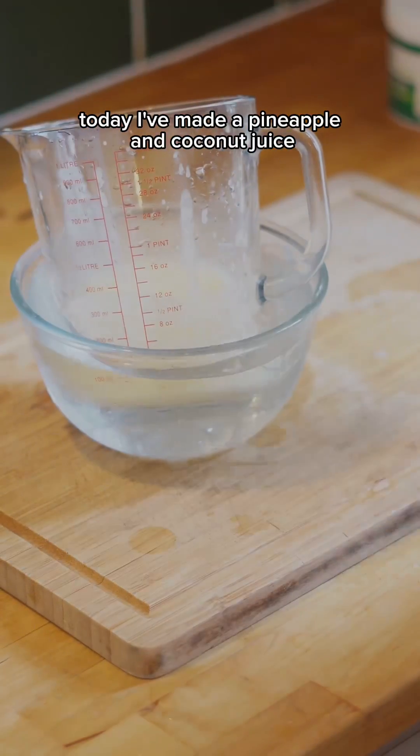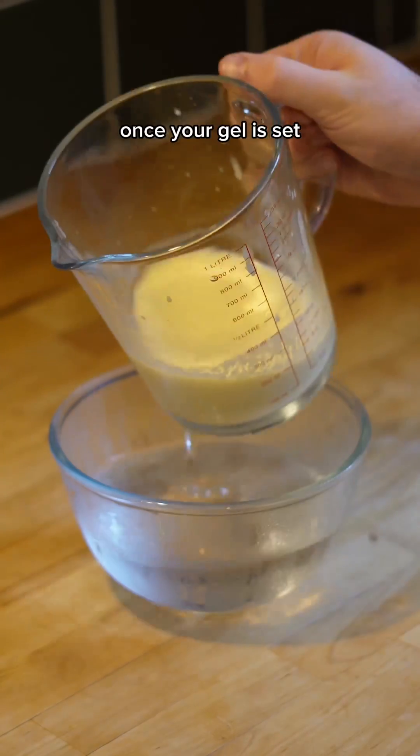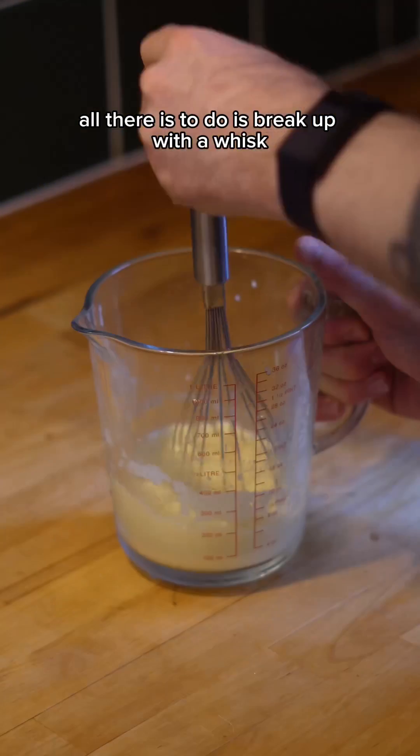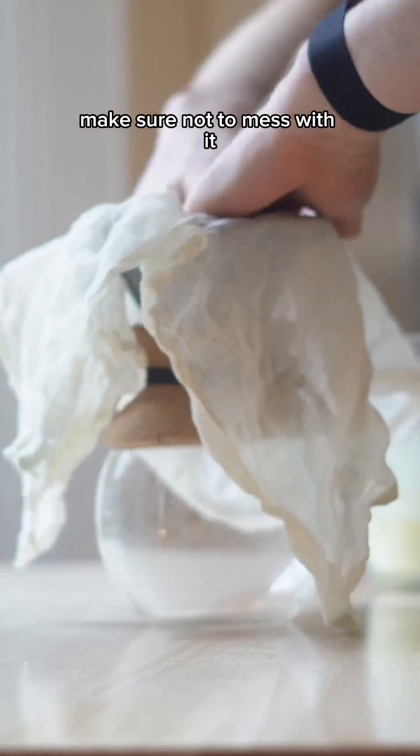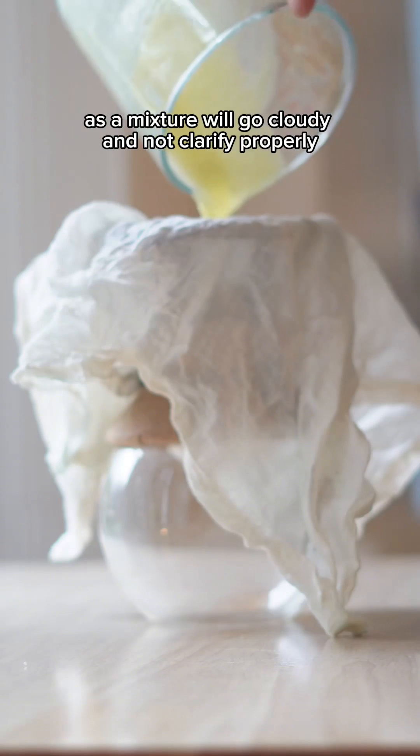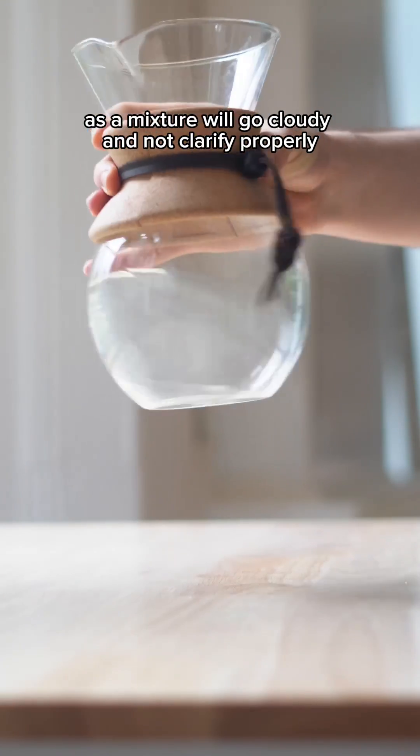Today I've made a pineapple and coconut juice for a simple rum highball. Once your gel is set, all there is to do is break it up with a whisk and pass it through a cheesecloth. Make sure not to mess with it or try to squeeze it through, as the mixture will go cloudy and not clarify properly.